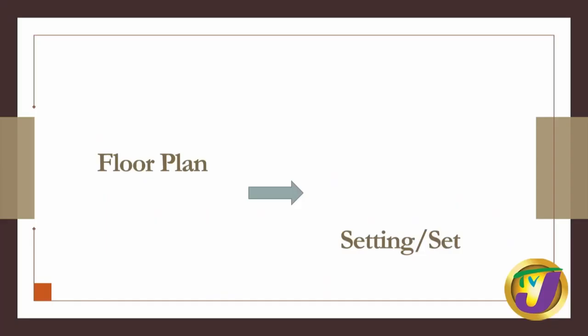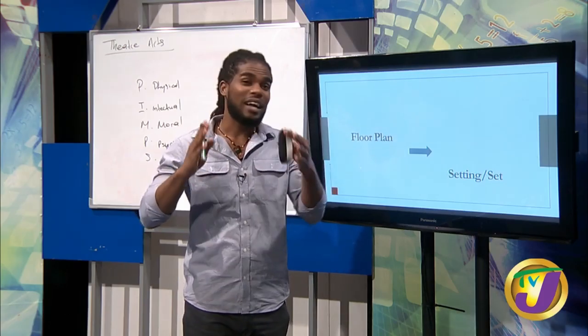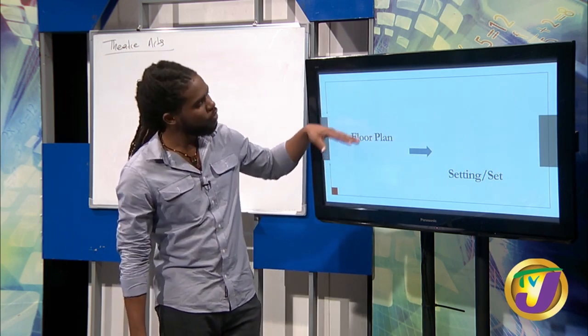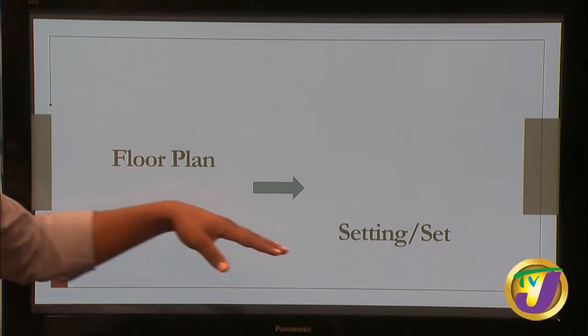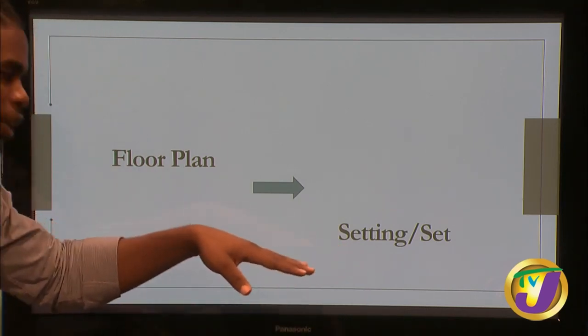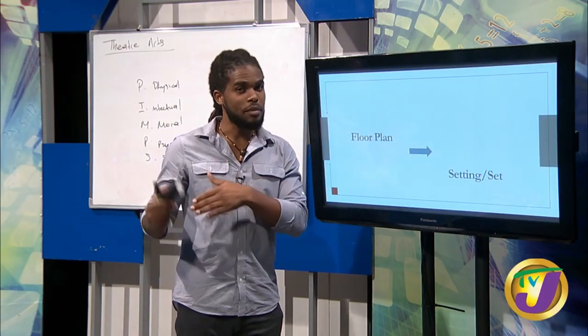Now we have the floor plan — moving on to the design objective. In order for the director and actors to work in the space during rehearsal when the actual set is not ready, they need a guide. This is where the floor plan comes in: the designer and director have a basic understanding of the floor layout and placement of pieces so they can run the play while the set is being made.